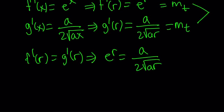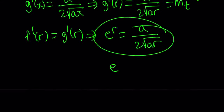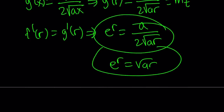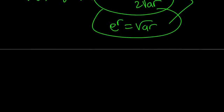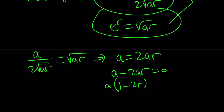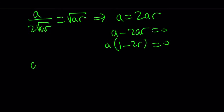Putting the two equations together: e to the r equals square root of ar, and e to the r equals a over two times square root of ar. Since both equal e to the r, we set them equal: a over two times square root of ar equals square root of ar. Cross-multiplying gives a equals 2ar. Factoring gives a equals zero or r equals one-half. If a equals zero, you get e to the x equals zero, which has no solutions since e to the power x can never be zero.